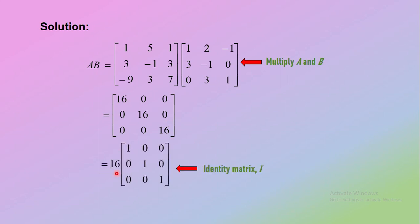Then factorize 16 out of the matrix to obtain the identity matrix. Therefore, we get matrix AB is equal to 16 times the identity.